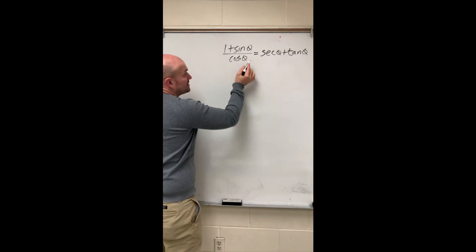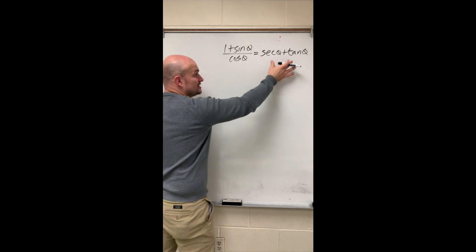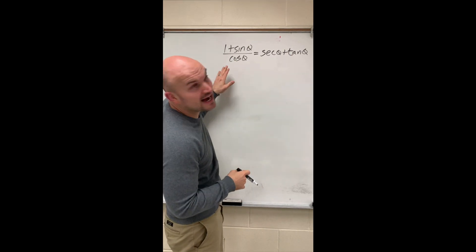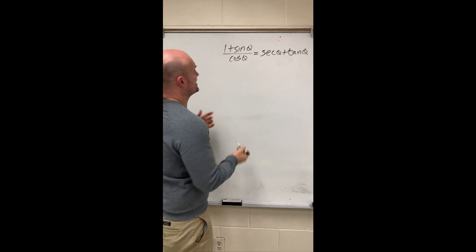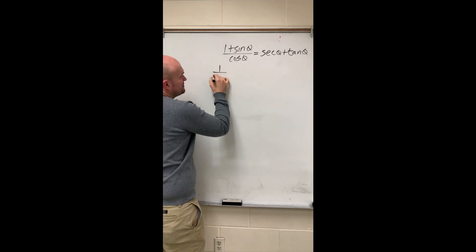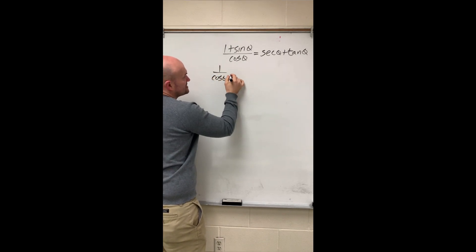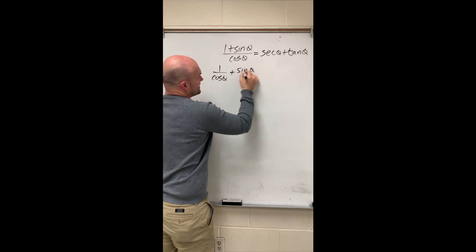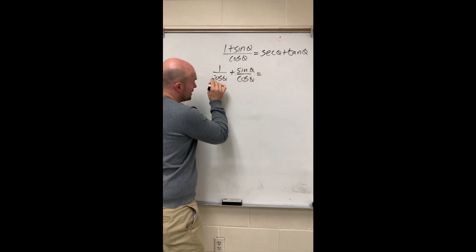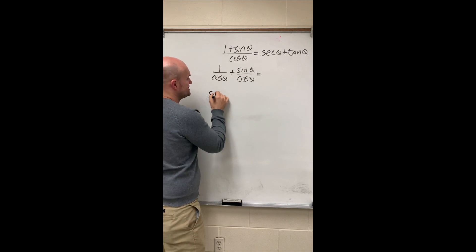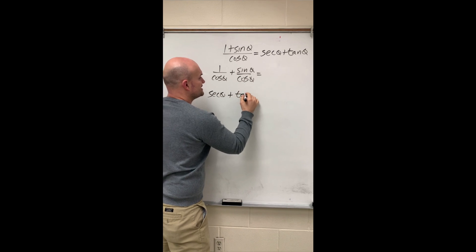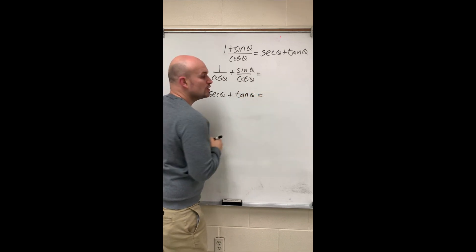In this identity, we want to get rid of our fraction. Because if we can get rid of our fraction, hopefully we can make this look like secant of theta and tangent of theta on the left-hand side. The first thing I recognize is I can distribute this cosine of theta into both of these terms. So I rewrite this as 1 over cosine of theta plus sine of theta over cosine of theta.